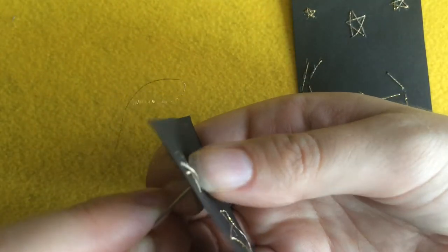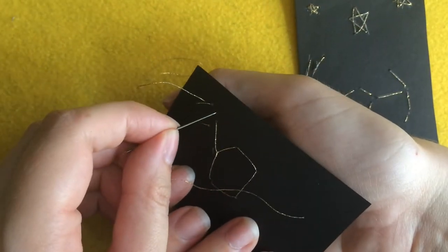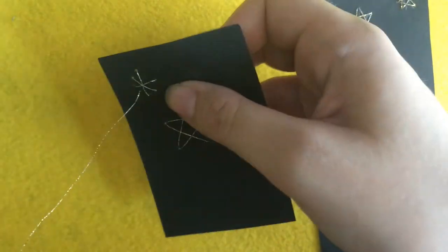One thing to remember is that paper is a lot more fragile than cloth. You don't want to put the holes too close together or pull too hard on the thread.